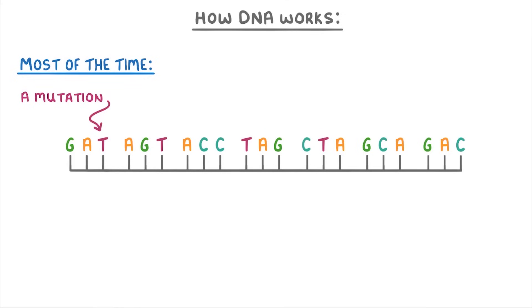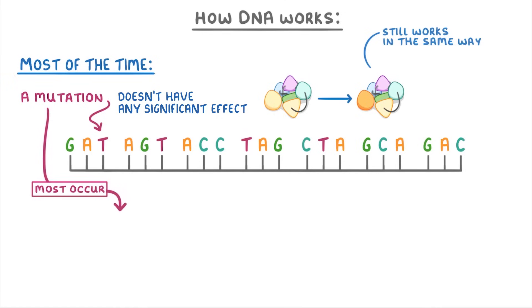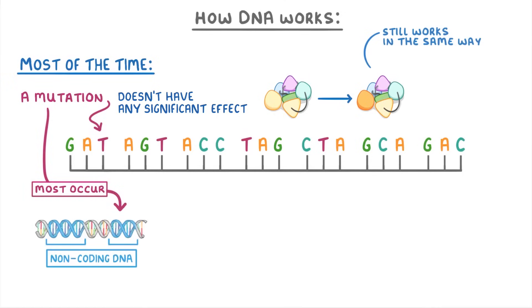Most of the time though, a mutation doesn't have any significant effect. This is because they'll often only affect a protein very slightly, so it might look a tiny bit different but it still works in basically the same way. Also, most mutations occur in what we call non-coding DNA, which isn't part of any gene and so doesn't code for a protein. Most of this non-coding DNA doesn't seem to do anything at all, and we're not really sure why we have so much of it.